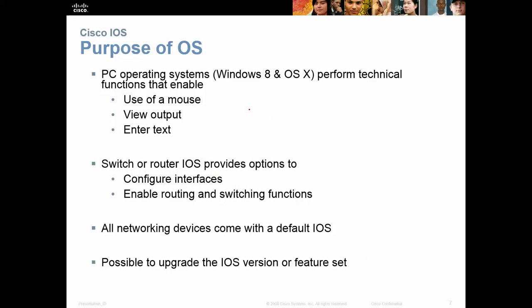The purpose of our operating system is to allow us to interact with that hardware — use a mouse, view output through a monitor and graphics card. It is the go-between between the hardware and us. On a switch or router, the IOS provides configuration interfaces so we can configure the router, switch, or firewall and change settings. All networking devices come with a default IOS, and we upgrade them as we go further into the course.